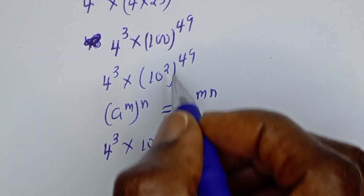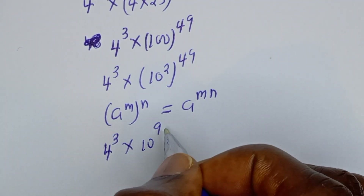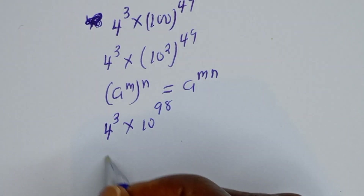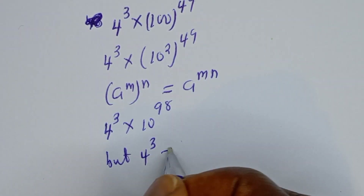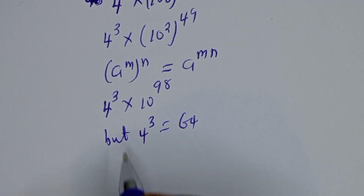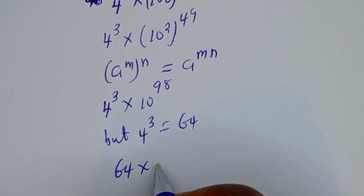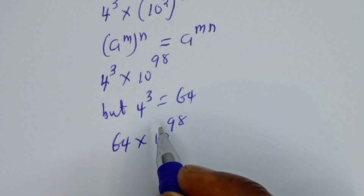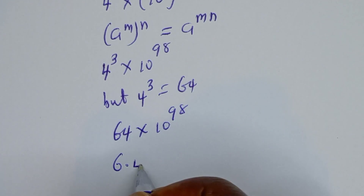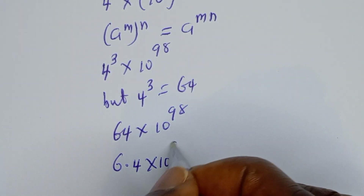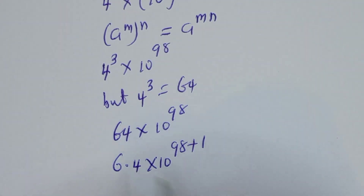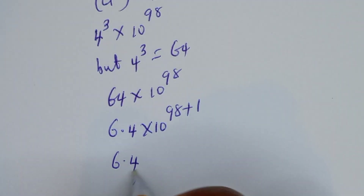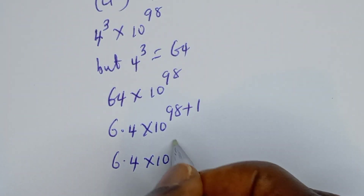Then this is 4 to the power of 3 multiplied by 10 to the power of 98. Now in order to write this in standard form, 4 to the power of 3 is 64, so this can be written as 6.4 multiplied by 10 to the power of 98 plus 1 because of the decimal point. Then this is 6.4 multiplied by 10 to the power of 99.